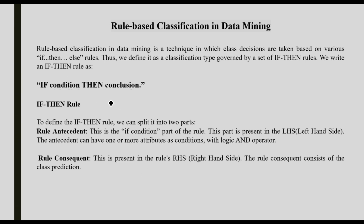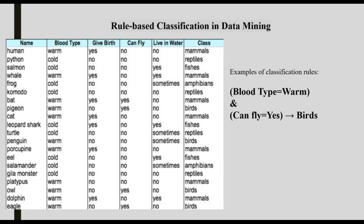Rule-based classification begins with rule making — creating if-then rules — and that is the first and very important step. Now let's take an example. If we use a biological dataset, we have species in our classes: mammals, reptiles, fishes, etc. That is the basis of the dataset.